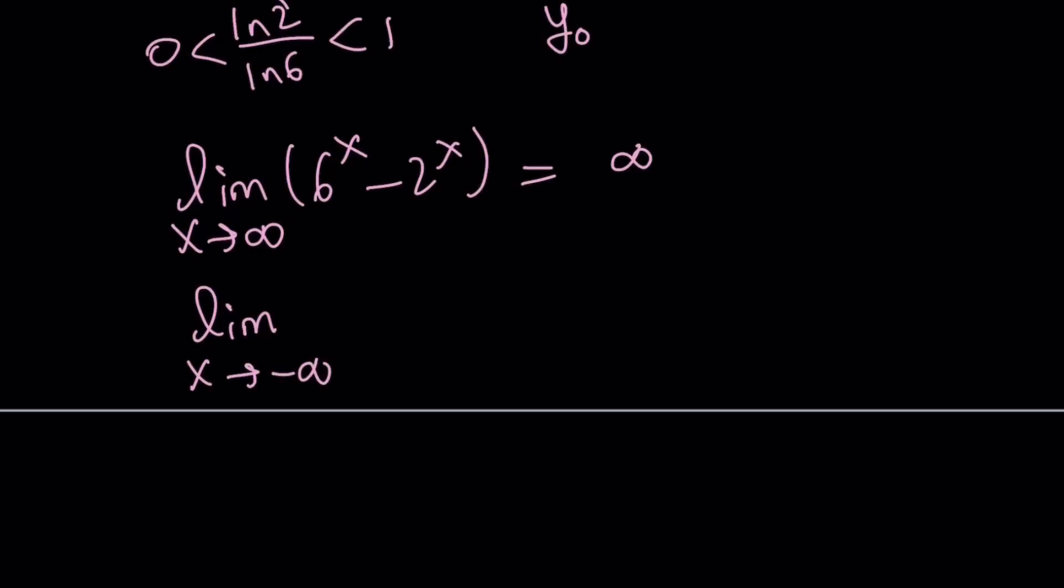As x approaches negative infinity, what happens, right? Something different happens. Because as x approaches infinity, think about it this way. 1 over 6 to the power negative x. As x approaches negative infinity, negative x approaches infinity. So 1 over infinity approaches 0. So this limit is 0. That exists.